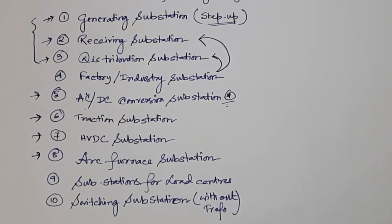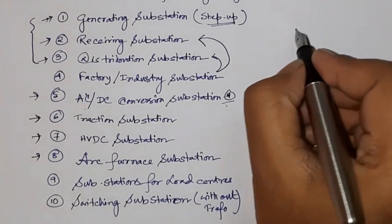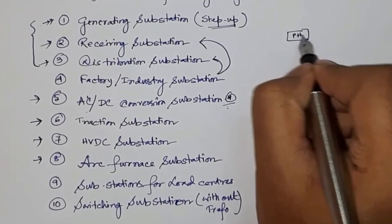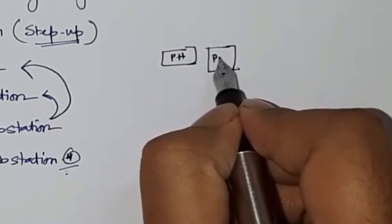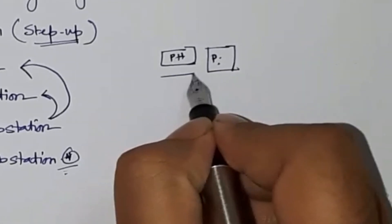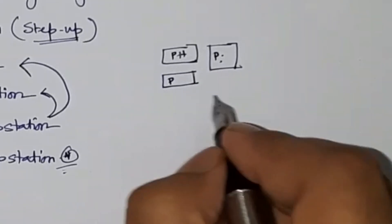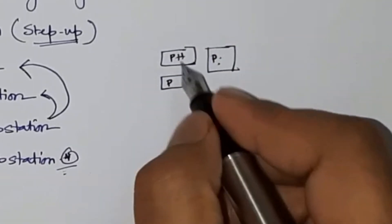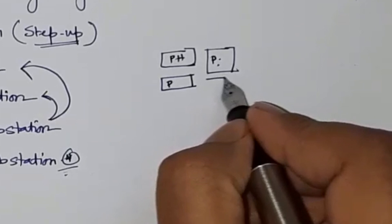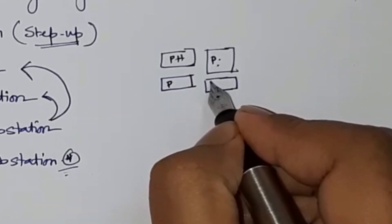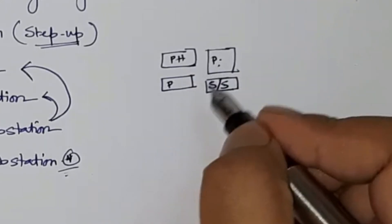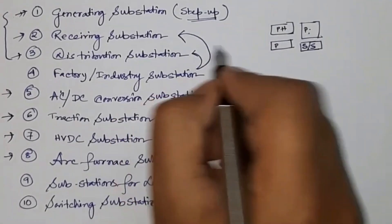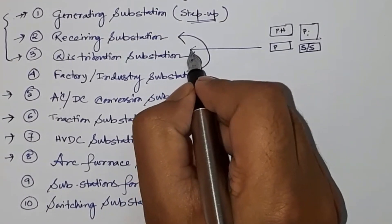Then there is the load center substation, a very common type installed near the load center where bulk loads are present — for example, a pump house and process units. The substation is installed at that load center location to supply power to those areas. This type can also be categorized as a distribution substation.